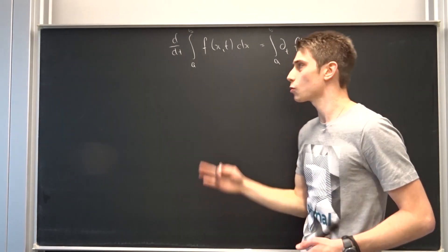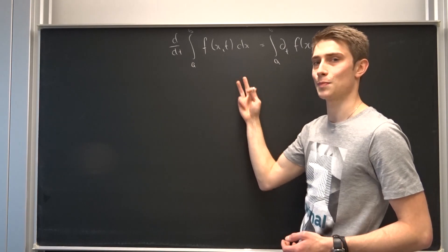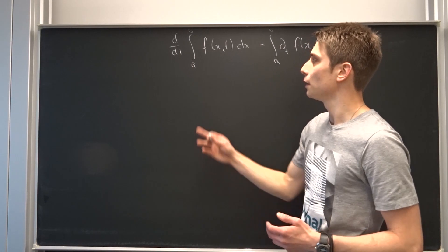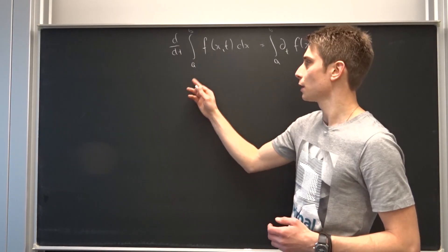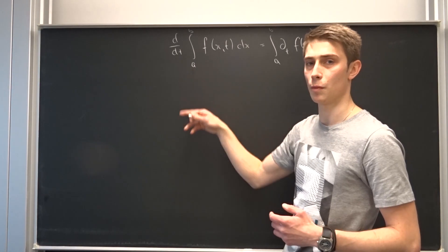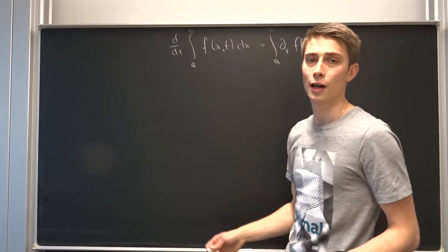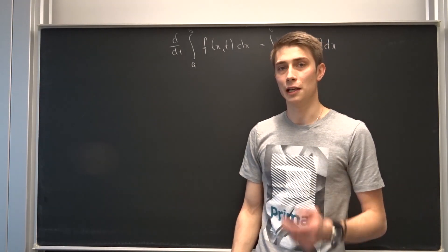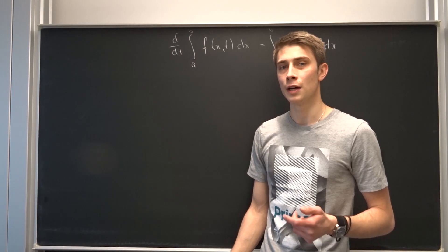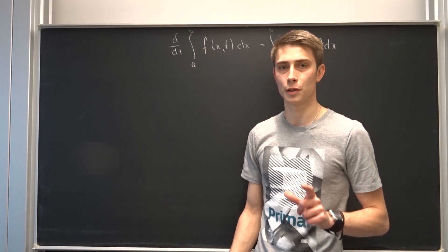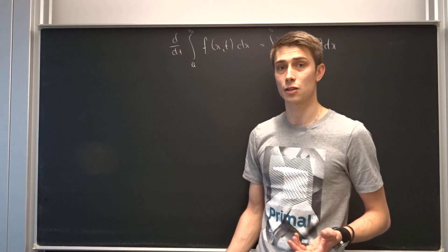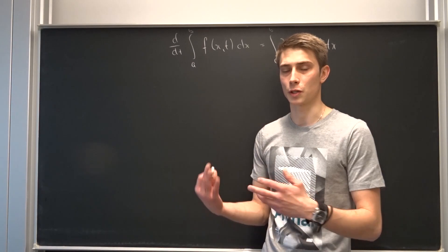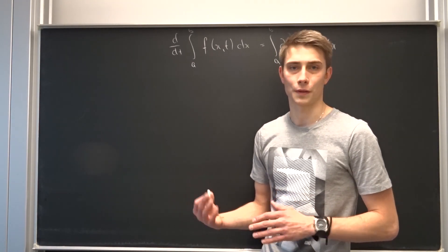So that's what we're going to derive today, but that's just a special case. We are going to derive the whole Leibniz formula, including the Leibniz formula for upper and lower bounds in terms of t. You are going to need three things today: the limit definition of a derivative, the second part of the fundamental theorem of calculus, and the mean value theorem. If you don't know anything about these, I'm going to explain them a bit later on.